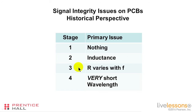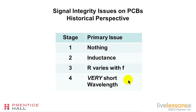In the third stage, we began to run into problems where resistance began to vary with frequency. This comes about through things like the skin effect and dielectric losses that look like resistance is varying with frequency — that's not exactly true as we will discuss, but it looks like it, and this raises a different kind of set of problems for signal integrity. Then the fourth stage came about when we started dealing with signals with very short wavelengths, so short that any solutions we came up with for the problems in the second and third stage are difficult or impossible to implement because there simply is not enough physical room.